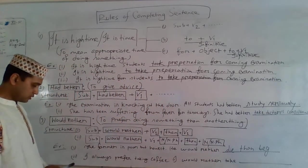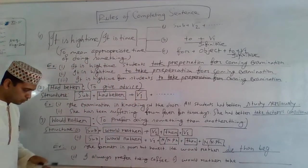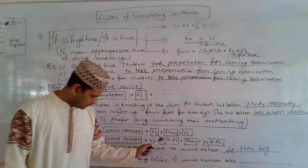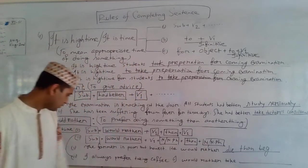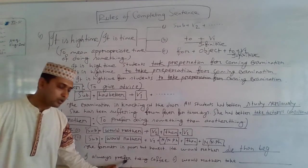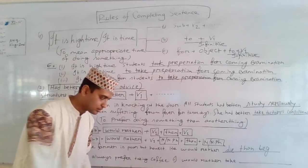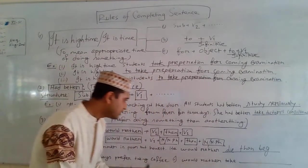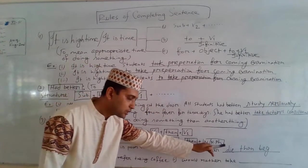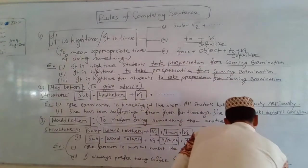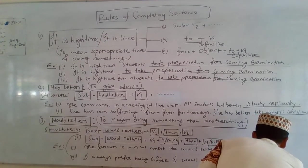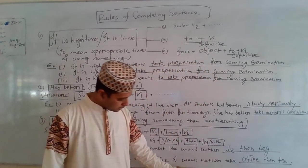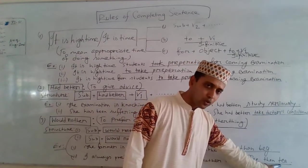Second example follows the second structure: Subject + would rather + V1 + noun or noun phrase + than + noun or noun phrase. 'I always prefer taking coffee.' This is a completed sentence. 'I would rather take coffee than tea.' After 'would rather,' 'take' is V1, then 'than,' then 'tea' is a noun. I think it is clear.